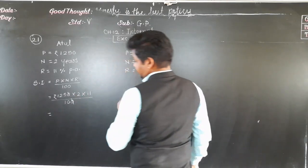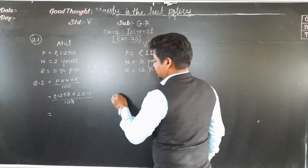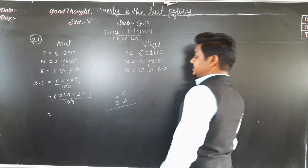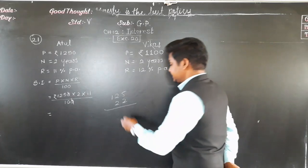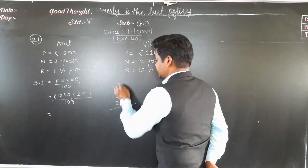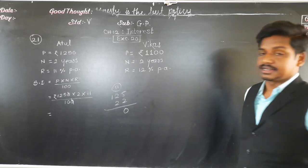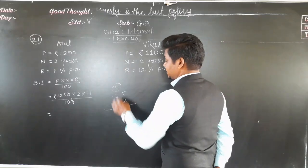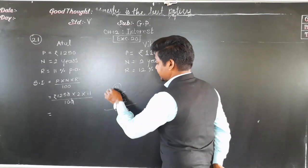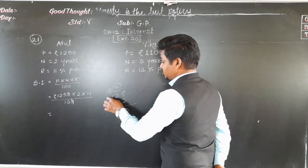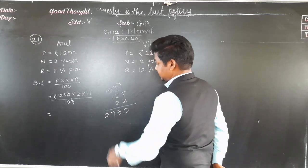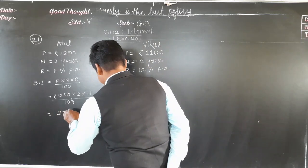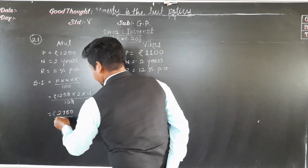One zero can be cancelled. Then: 11 twos are 22, into 125 — that is 125 into 22. Twenty-two fives are 110: 0 down, carry 2. Twenty-two twos are 44 plus 11 is 55: 5 down, carry 5. Twenty-two ones are 22 plus 5 is 27. So we get 2750 upon 10, which gives rupees 275 as the interest for Atul.